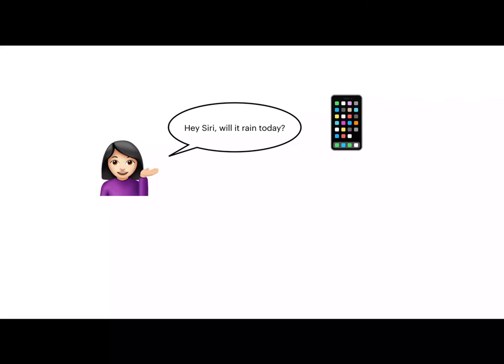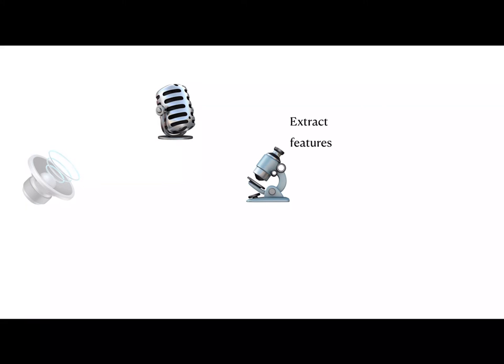Let's review what the overall process of automatic speech recognition looks like. The running example that we're using is a user speaking to her smartphone, asking, Hey Siri, will it rain today? The speech signal, the sound, comes from the person's mouth and is encountered at the microphone in the device. The microphone includes an analog-to-digital converter that is responsible for taking the analog audio sound wave and returning a digitized representation.